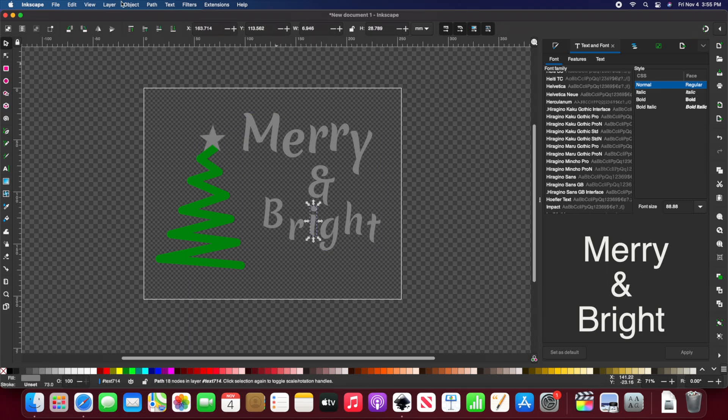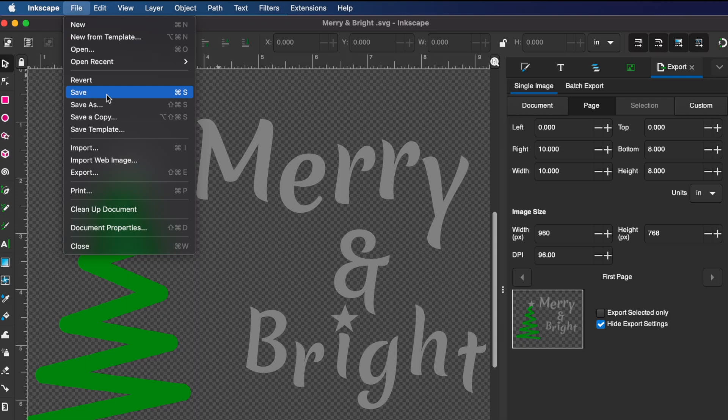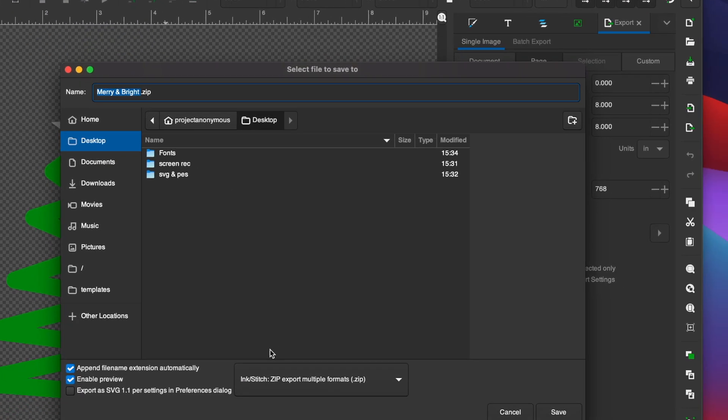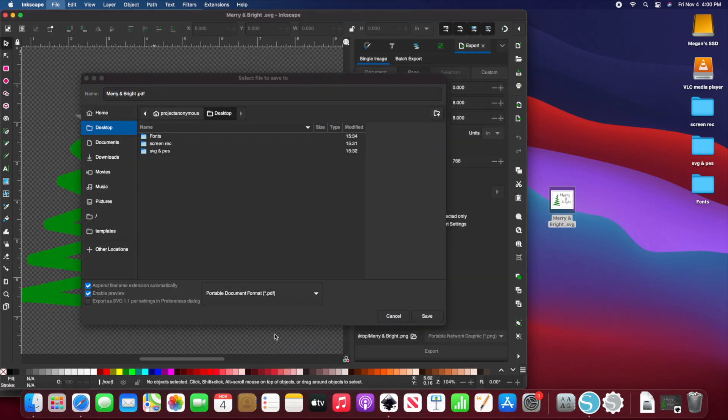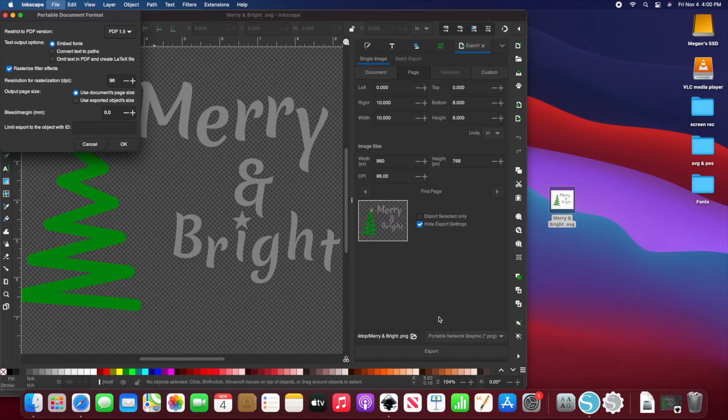I'm changing the color to silver just to visualize because we only have silver and green heat transfer vinyl. Now I'll further break apart the I so I can get rid of the dot to replace with a star, which I'll copy and paste from the tree. Command C, Command V.